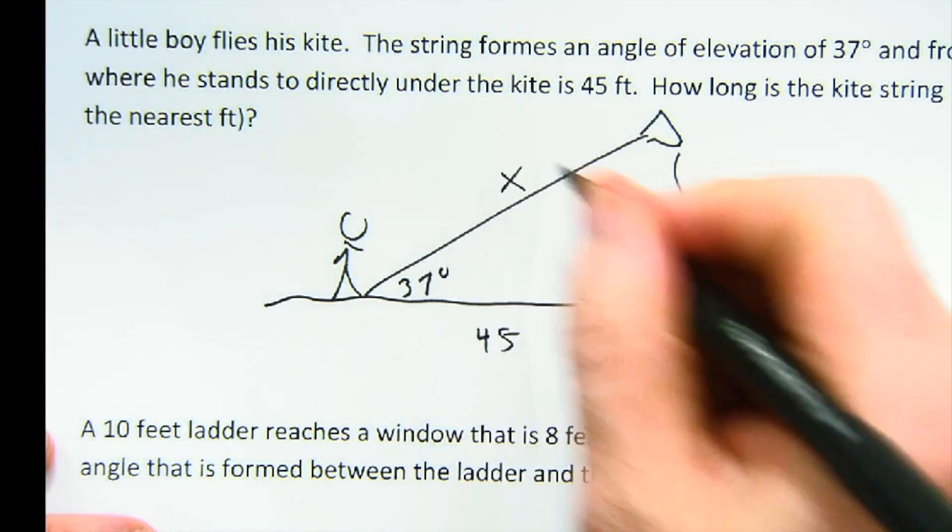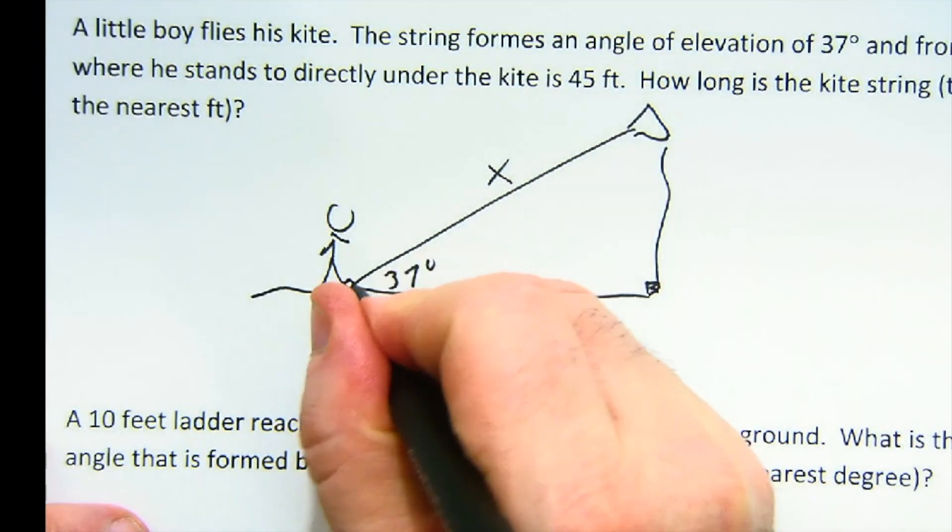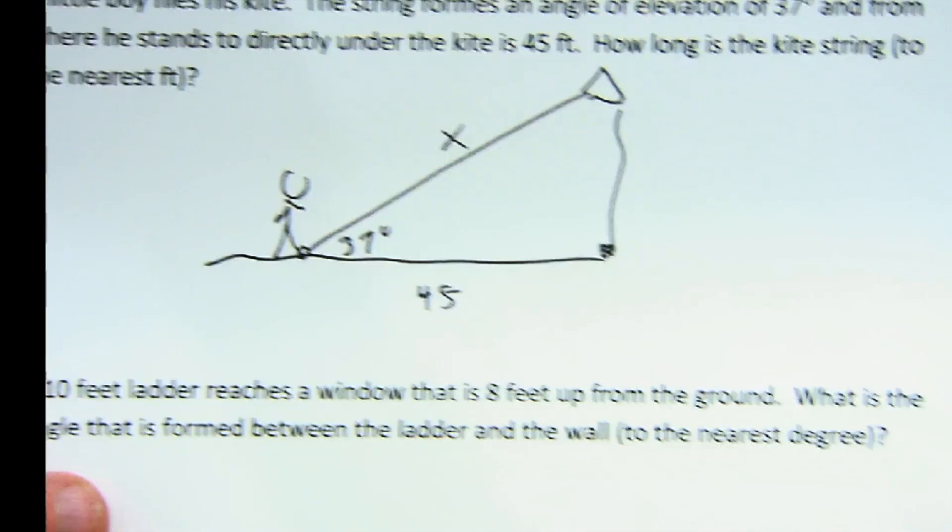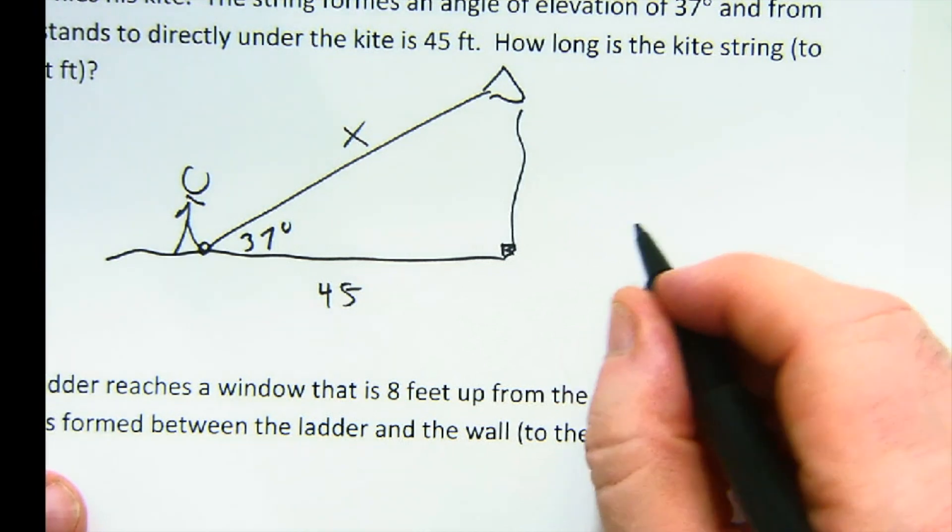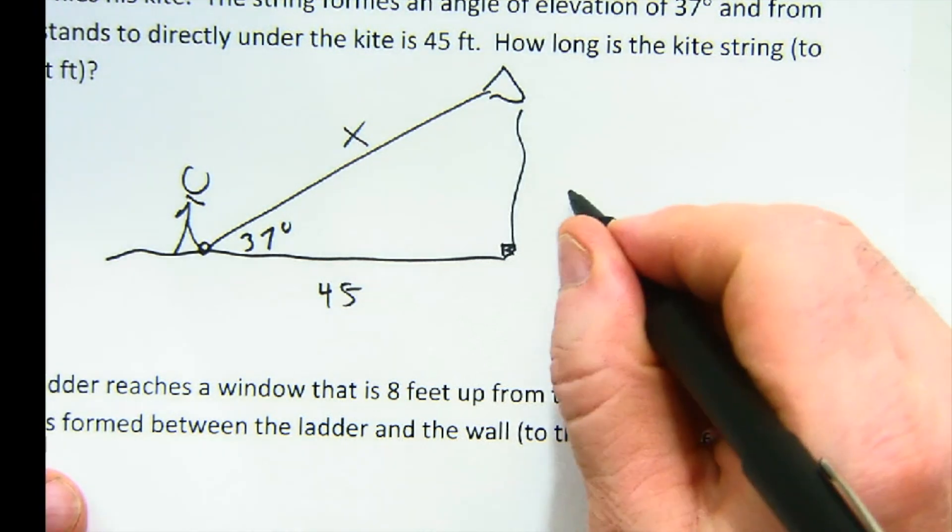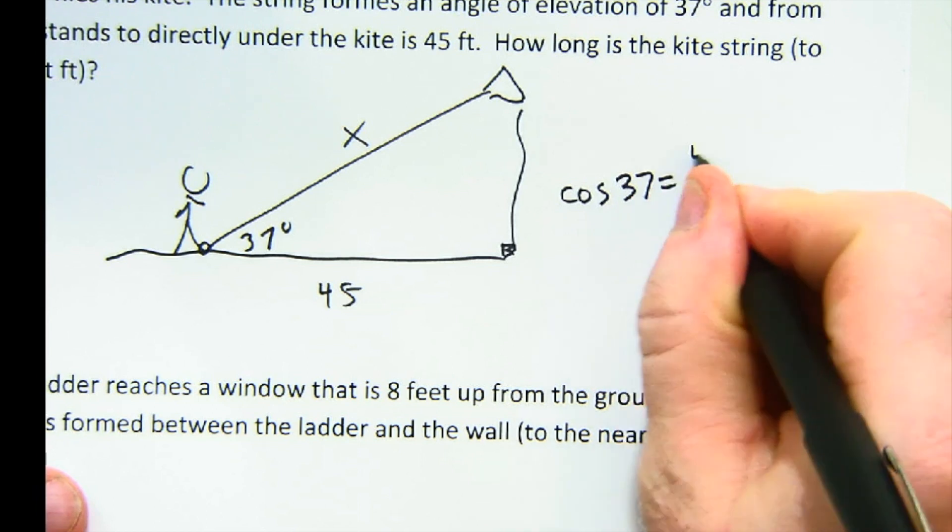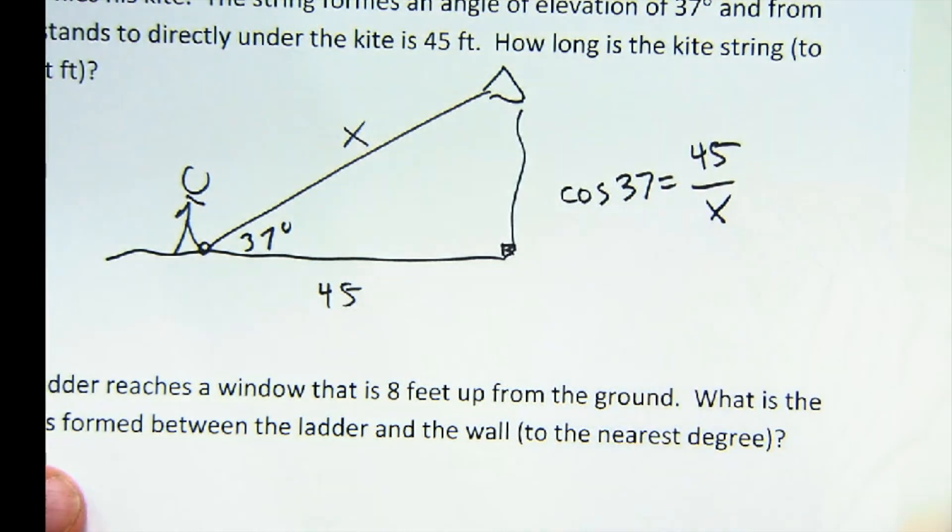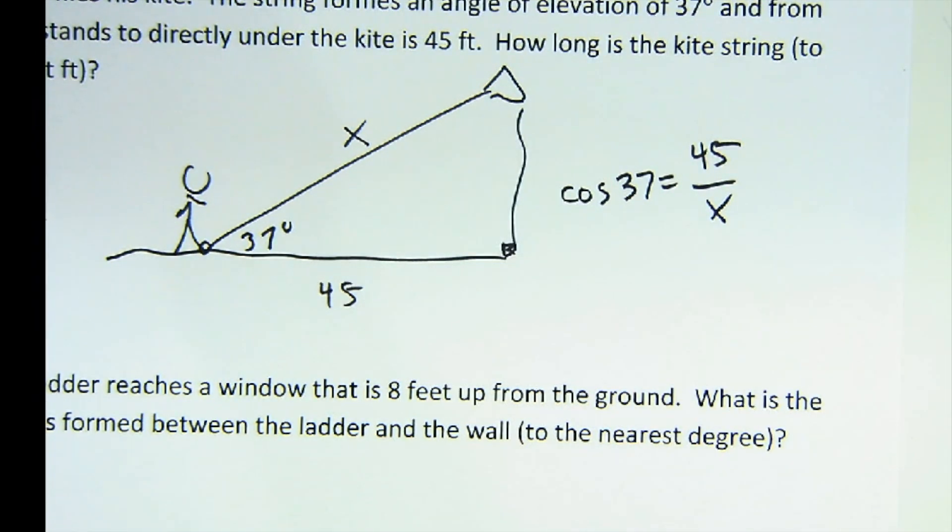From where he stands to directly under the kite is 45. How long is the string? So, again, notice I'm flying the kite off of his toe for simplicity. And so I get, looks like cosine of 37 is 45 over x. And I would just simply solve that.